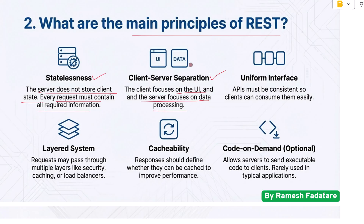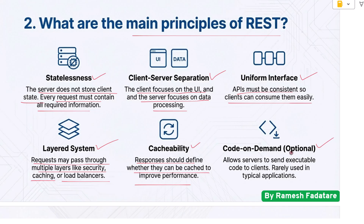Third, uniform interface — the API must be consistent so clients can consume them easily. Fourth, layered system — requests may pass through multiple layers like security, caching, or load balancers. Fifth, cacheability — responses should define whether they can be cached to improve performance. Sixth, code on demand — which is optional — it allows servers to send executable code to clients, but is rarely used in typical applications.